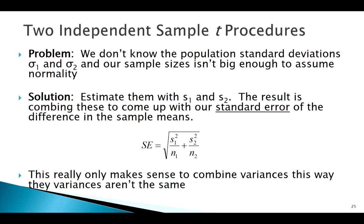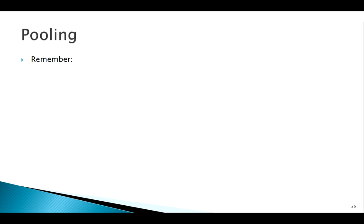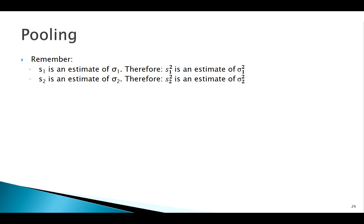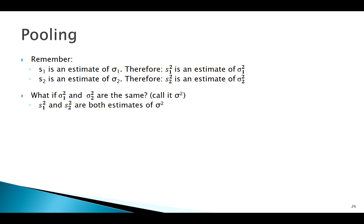What if the variances of the two groups are the same, or at least pretty close? Let's think about this idea called pooling. Remember, s1 squared should be an estimate of σ1 squared, and s2 squared should be an estimate of σ2 squared. If the two variances are the same — just call it σ² — then both sample variances are estimates of the same thing, so we can combine those estimates through a process called pooling.